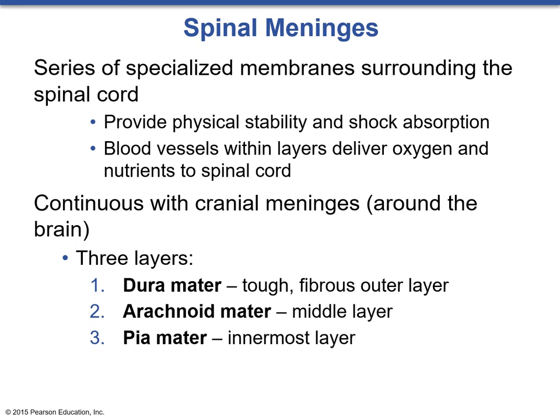We talked about the meninges as layers of protection for the brain — remember they extend all the way down from the brain across the spinal cord. The spinal meninges are a series of specialized membranes that surround the spinal cord and provide physical stability and shock absorption. There are blood vessels within the layers that deliver oxygen and nutrients to the spinal cord, and the wrapping helps keep cerebrospinal fluid in. These are continuous with the cranial meninges and are the same three layers: the dura mater, the arachnoid mater, and the pia mater.